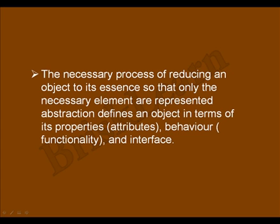For example, if I create a customer object, only the customer details will be available. If I create an address class, only the address fields like country and city — those particular attributes or methods — are available. So reducing complexity in reality means exactly that. The necessary process of reducing an object to its essence so that only the necessary elements — whether attributes or behaviors — are represented. Abstraction is about designing how you are going to implement a particular class.